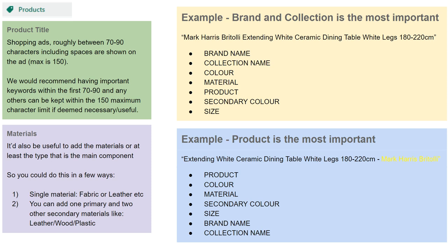One thing we've found, especially if you want to white-label something, is that by removing the brand you can make a higher margin. When someone comes to your website and finds the white ceramic dining table, if they search Google for it they're unlikely to find the exact same one — so removing the brand and collection name helps eliminate some competition. These things come down to how you're structuring your traffic strategy, how much margin you want, what competition is like, and whether you can white-label or must include the brand. We can give more advice on this in our one-to-one mentoring.